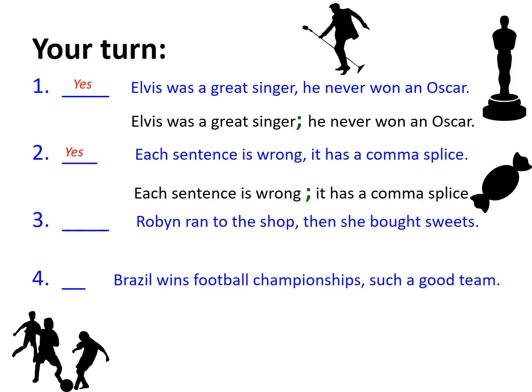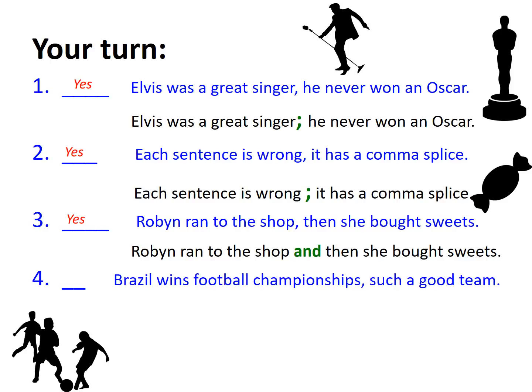Let's look at example three: 'Robin ran to the shop, then she bought sweets.' This also has a comma splice because two independent clauses are joined by only a comma. A correction using a conjunction would be: 'Robin ran to the shop and then she bought sweets.' Equally: 'Robin ran to the shop; then she bought sweets.'